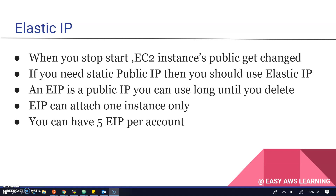You can attach an Elastic IP to one instance and later detach it and attach it to another instance. However, if you purchase an Elastic IP and do not attach it to any instance, you will still be charged for it — so make sure to use it properly. You can get up to 5 Elastic IPs per account by default, and if you need more, you must submit a request to Amazon to increase the limit.